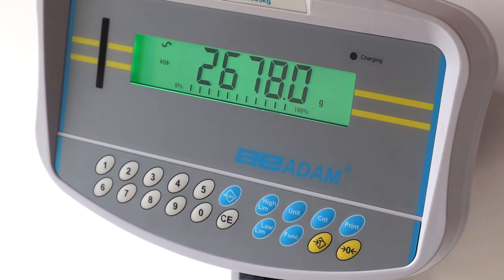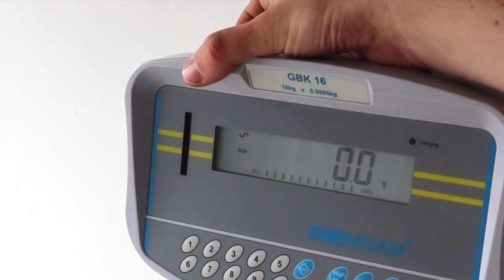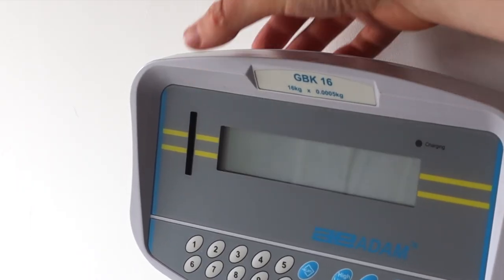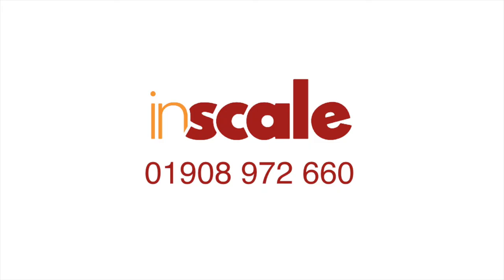If you've opted for an optional printer, pressing the print button twice will print the results. When you've finished weighing, you can switch off the scale using the button on the back of the indicator. To find out more about the GBK from Adam Equipment, just get in touch.